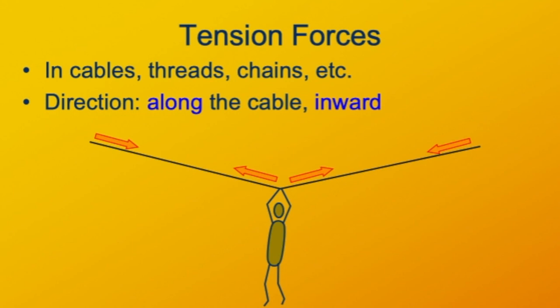Here we're showing a person hanging from a cable. On the right, the cable is pulling the person up and to the right. On the left, the cable is pulling the person up and to the left. The ends of the cables are pulling inward on wherever their anchors are.